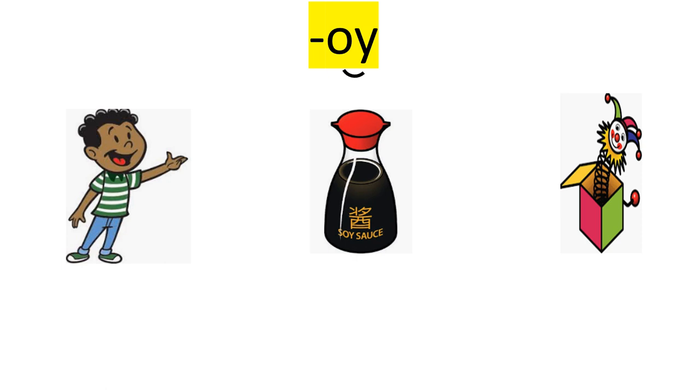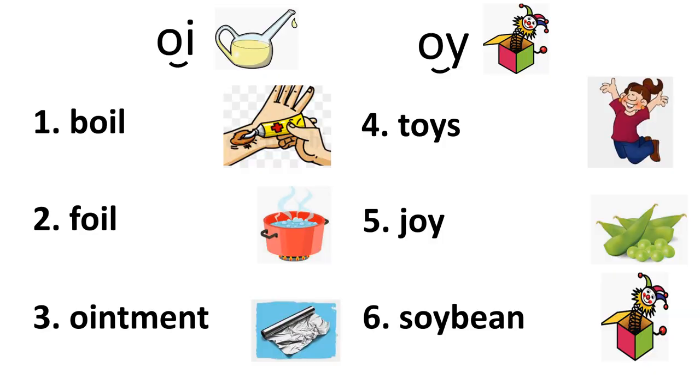To spell the OI/OY sound, use OY in the final position, as in boy, soy, and toy.